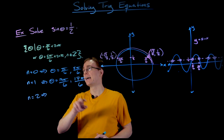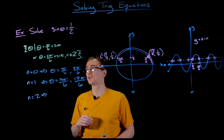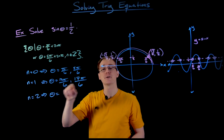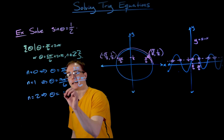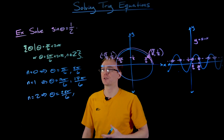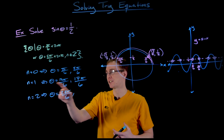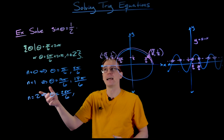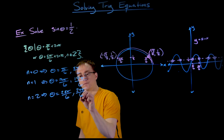If n = 2, we plug into our formula and now we're adding 4π to our original solution. Adding 4π to π/6 gives us another version of that first solution: 25π/6. We can repeat this for our second initial solution — we got 5π/6 the first time, added 2π to get 17π/6 when n = 1, and now adding 4π with n = 2 gives us 29π/6.